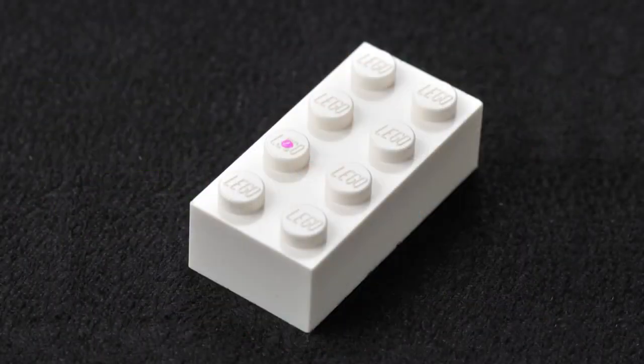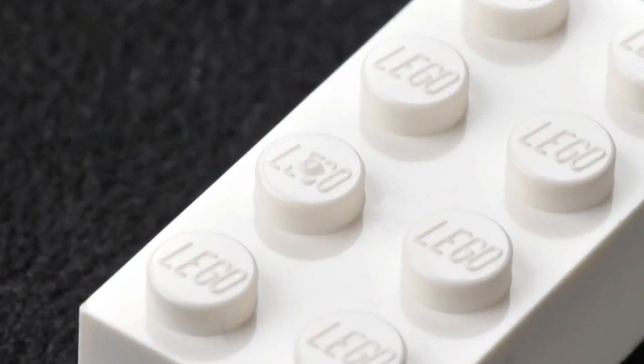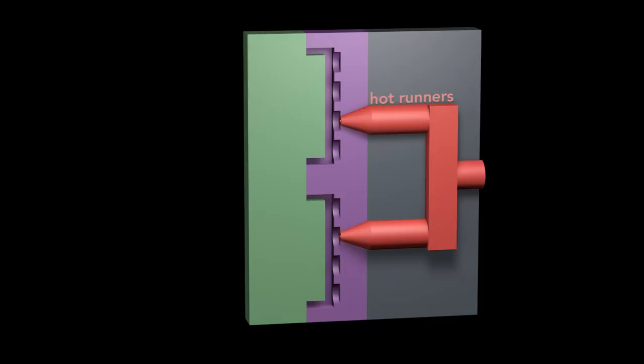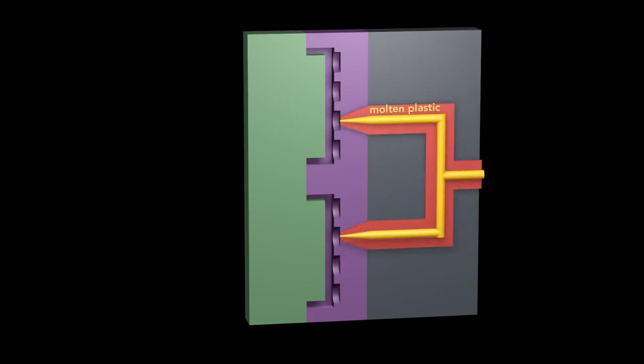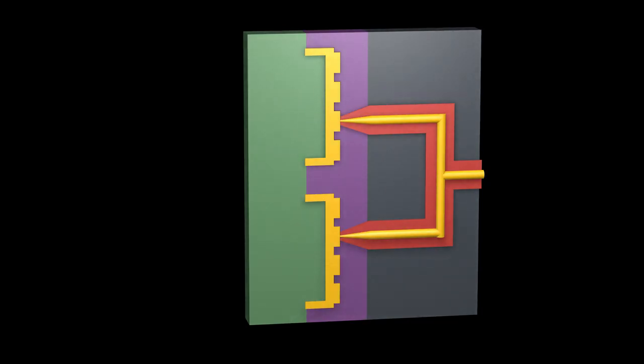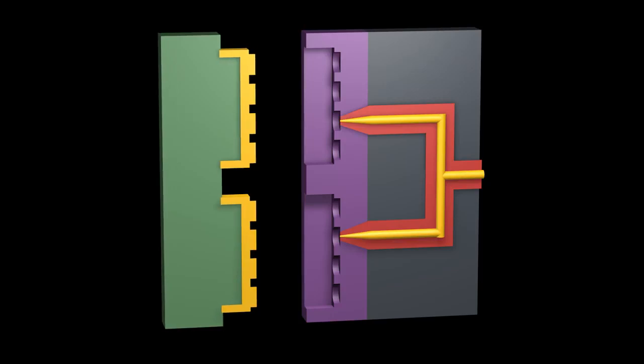One impressive example of injection molding is the Lego brick. You can see the injection point in the middle of a stud, but this is not from a gate or a sprue. The Lego molds use hot runners. Hot runners are a heated distribution network. This keeps plastic inside the runners molten, while the plastic in the mold solidifies. This leaves no gates or sprues to be removed. The molded bricks are ejected, ready to use.